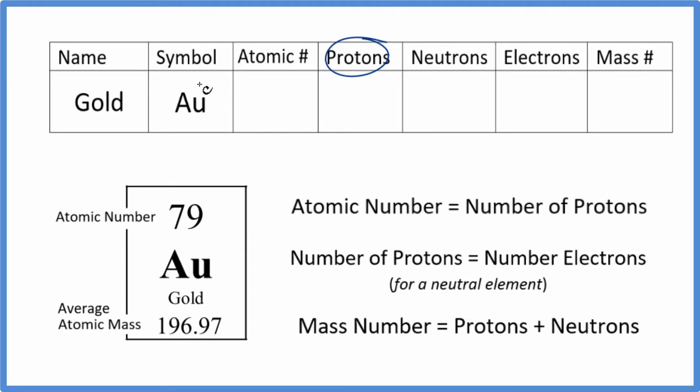Gold only has one stable isotope, which makes this kind of easy. We look on the periodic table, Au, gold here, and we find the atomic number. The atomic number for gold is 79. The atomic number equals the number of protons, so we have 79 protons.